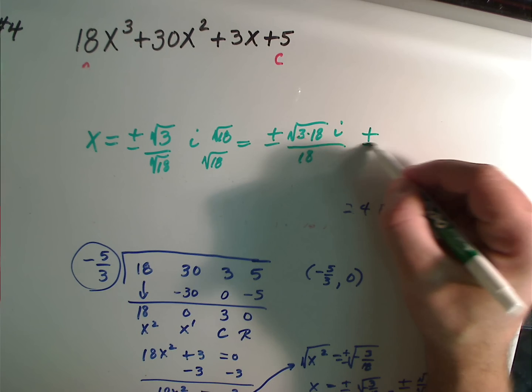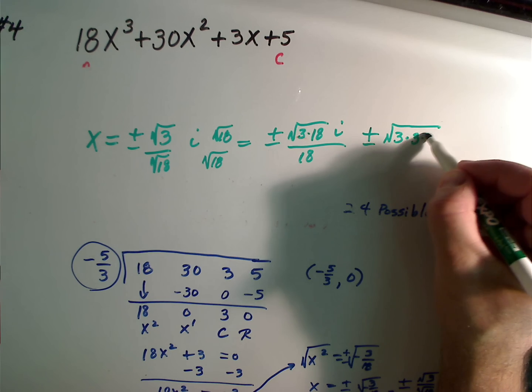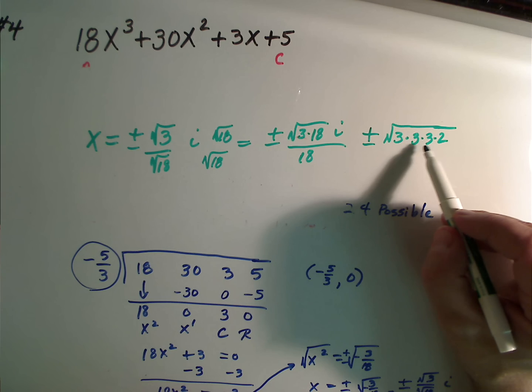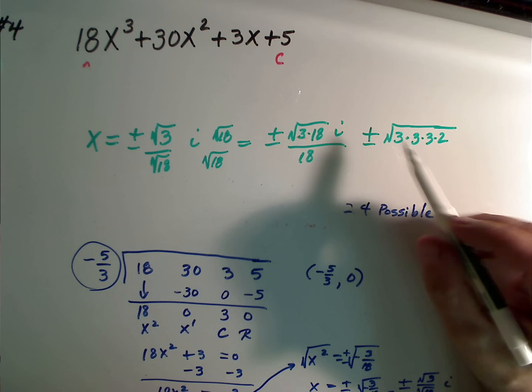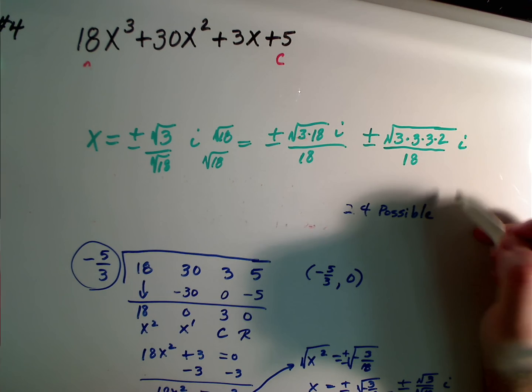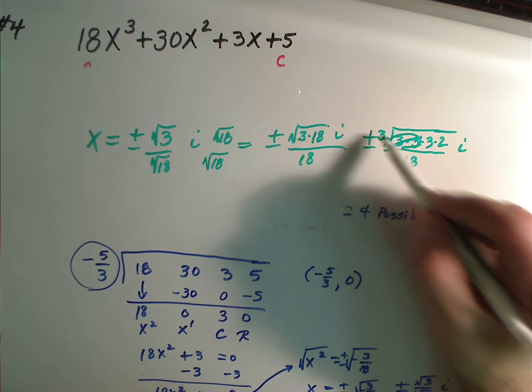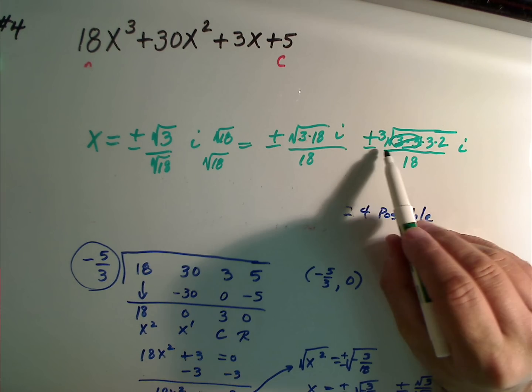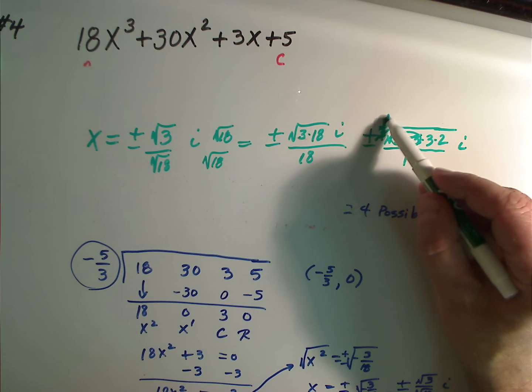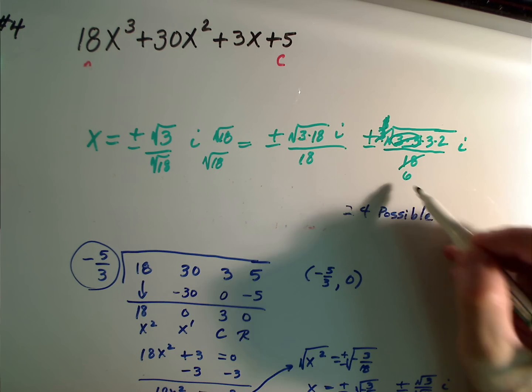18 is further factorable. So, we are now at plus or minus the square root of 3 times 3 times 3 times 2. Check this out. 3 times 3 is 9 times 2 is my 18. And this is all over my 18, i. A pair of 3s can now be brought out. And 3 and 18 are simplifiable. 3 goes into 3 once. 3 goes into 18 six times.